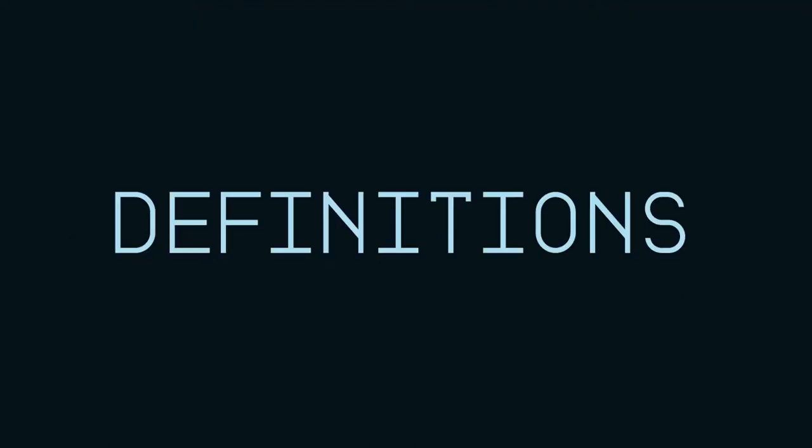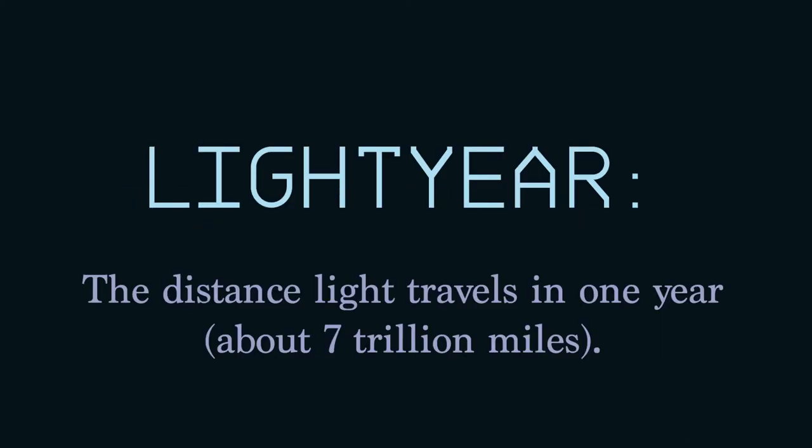This audio tour will use some terms which may be somewhat unfamiliar, so some definitions will help. Distances in astronomy are, well, astronomical. Distance is measured in light years. One light year is the distance light travels in one year, or about 7 trillion miles. Shorter distances are measured in light minutes or light seconds.